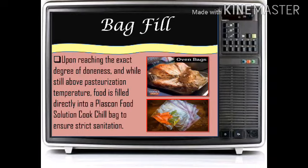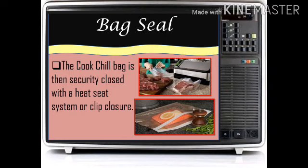Bag fill: food is filled directly into a Plaskon food solution cook-chill bag to ensure strict sanitation. These are containers for leftover food or excess ingredients so they can be used again the next time you cook, helping to avoid spoilage. Bag seal: the cook-chill bag is then securely closed with a heat seal system or clip closure — the difference from bag fill is that it has a seal or clip closure to secure the food.